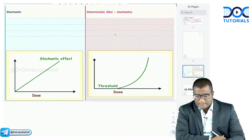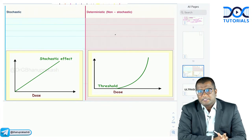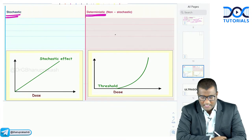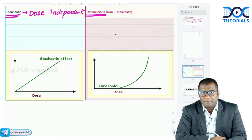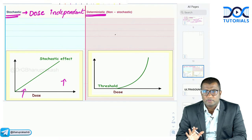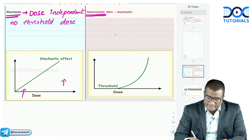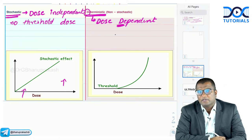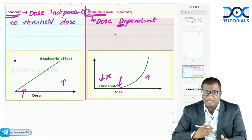Coming to stochastic versus deterministic effects of radiation. Stochastic effects are dose-independent — they can occur at low or high doses with no threshold dose. Deterministic effects are dose-dependent — they only occur above a threshold dose and do not occur at low doses. Memory tip: D for deterministic = dose-dependent; stochastic = dose-independent.